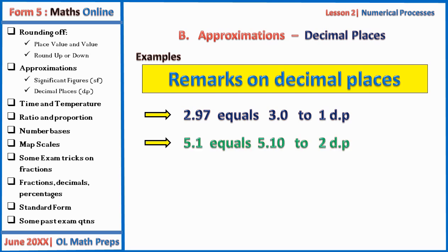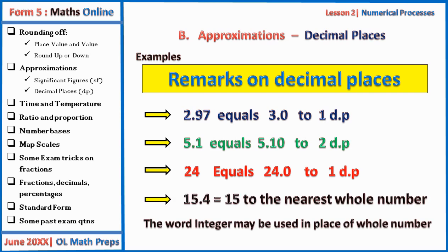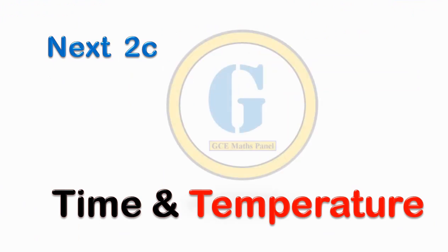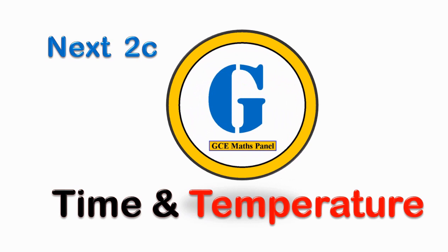5.1 can be written as 5.10 to two decimal places — just add a zero. 24 is equal to 24.0 to one decimal place. 15.4 is equal to 15 to the nearest whole number. Note that the word 'integer' may be used in place of whole number. Our next lesson will be on time and temperature. Please don't forget to subscribe and invite your friends to watch.